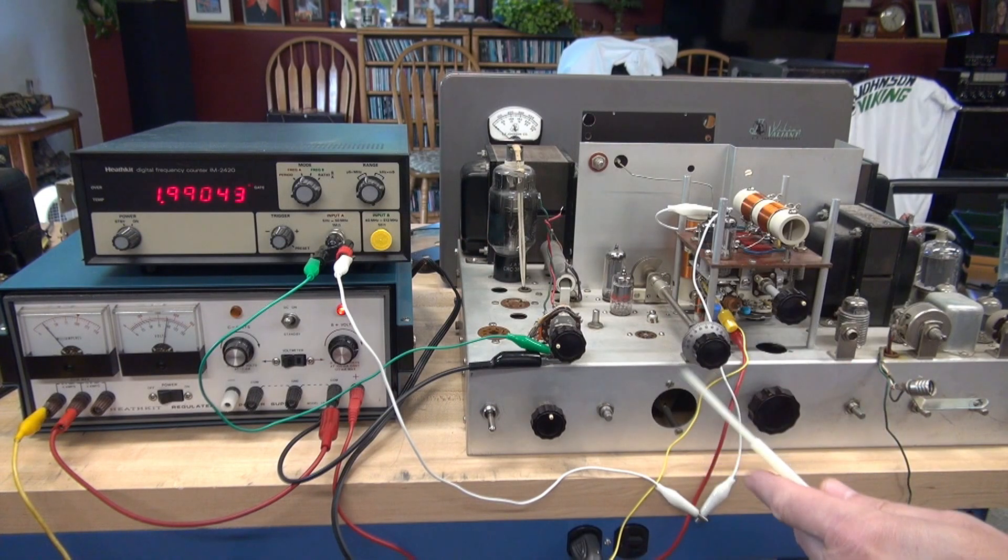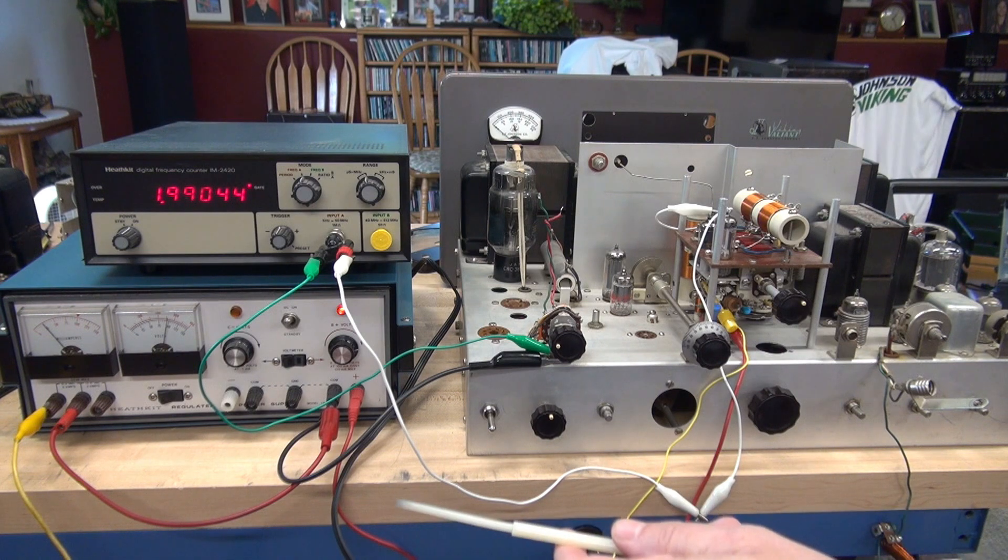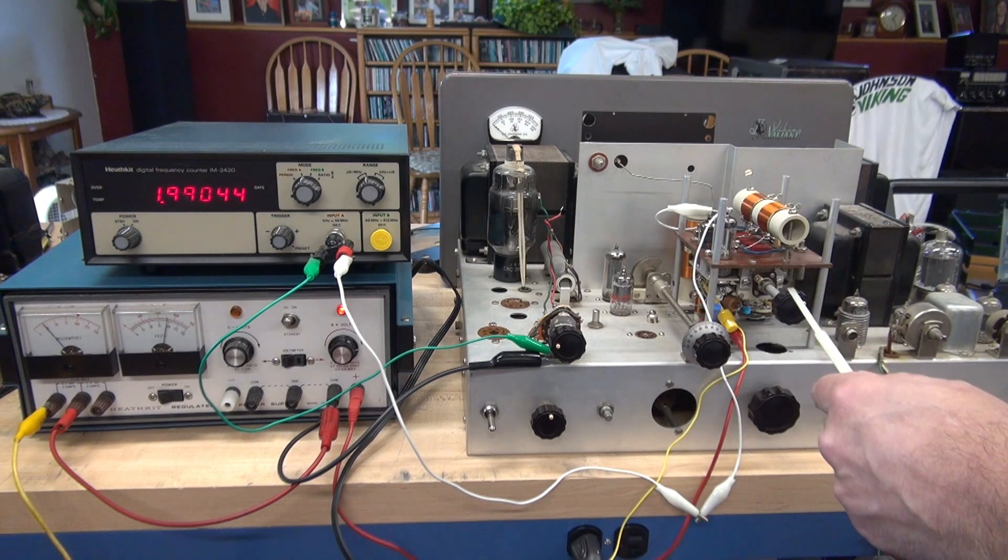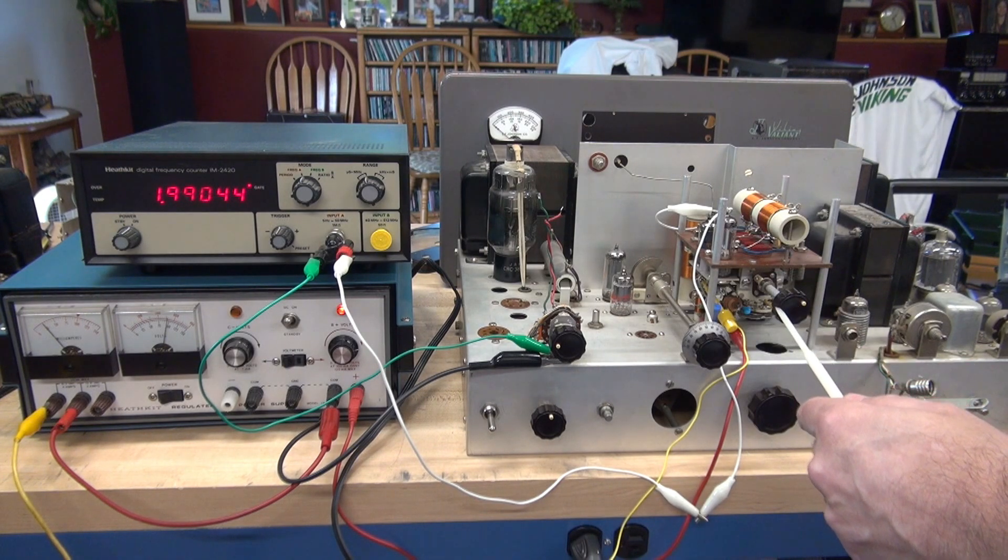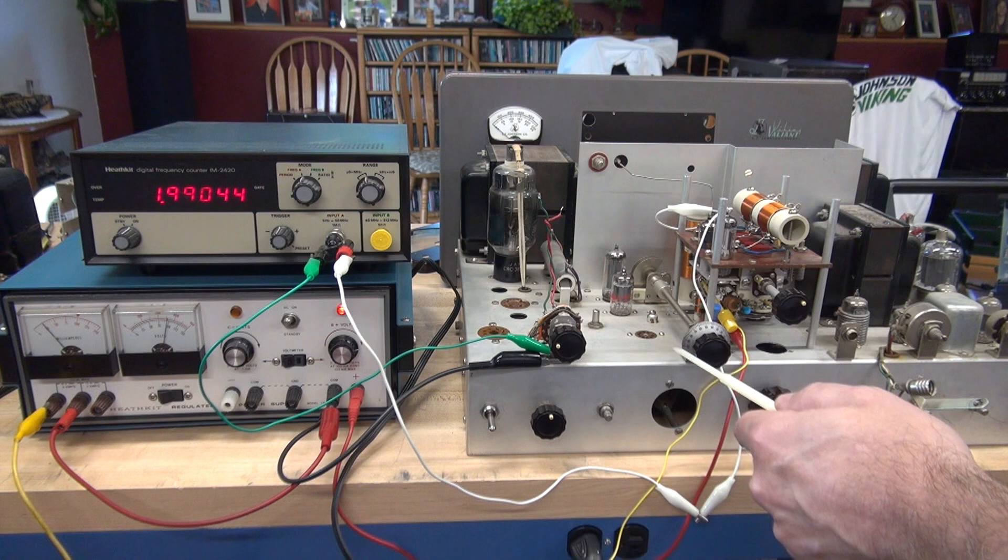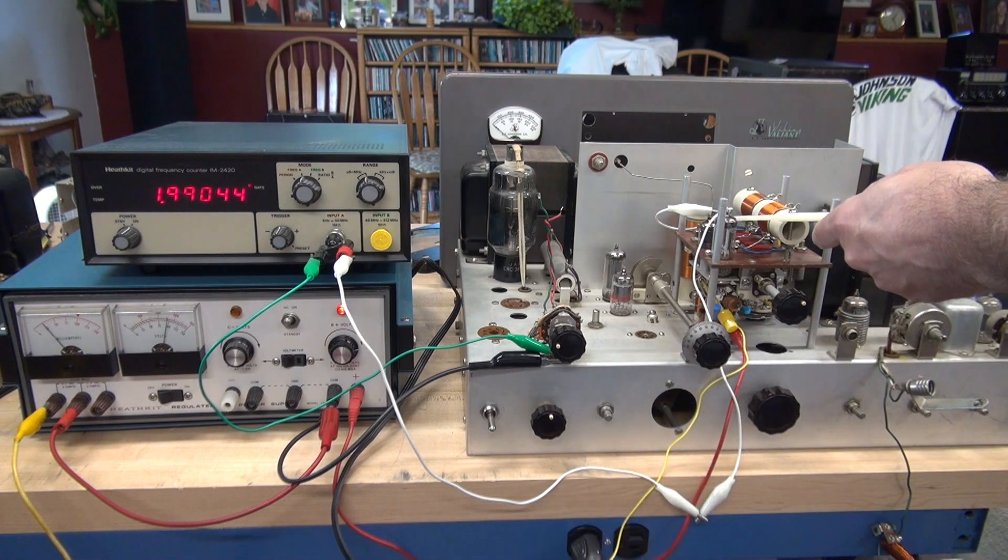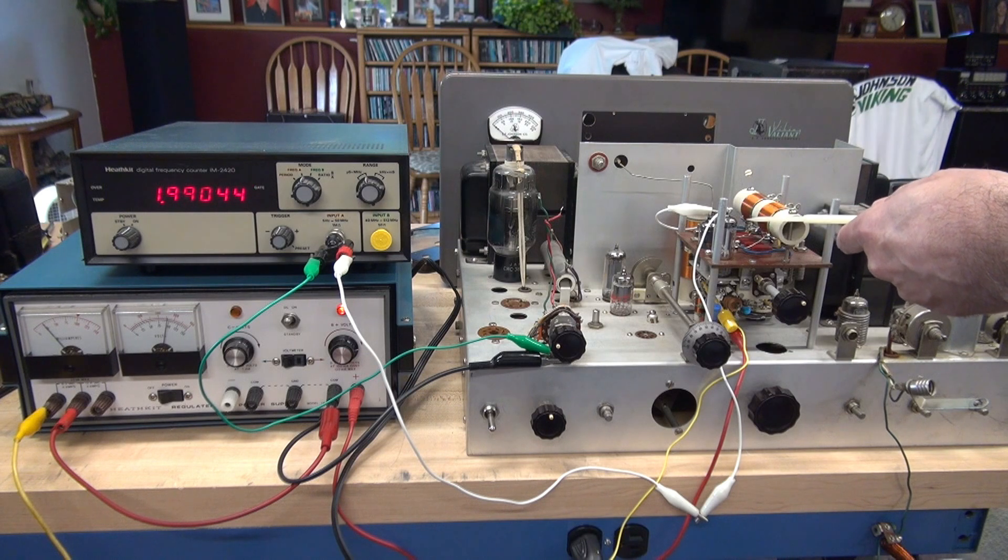Step two, you're going to connect the 6.3 volt AC source from our Heathkit power supply to pin 4 of the 6AU6. Low side is going to go to chassis. When you turn on the power supply, you'll see the filament on just that tube light.